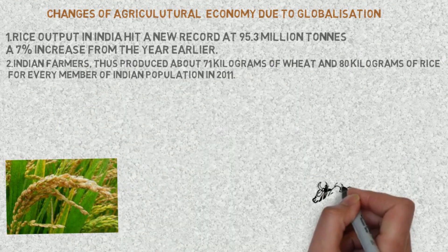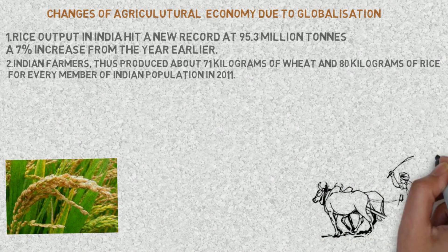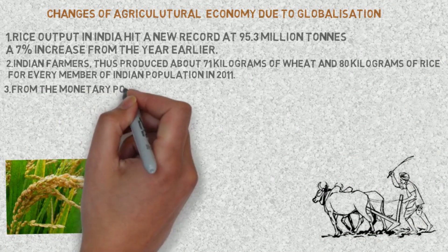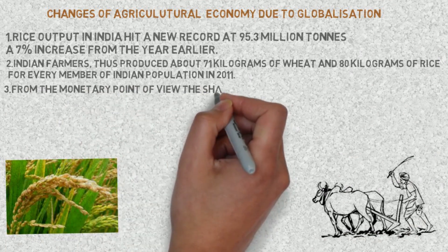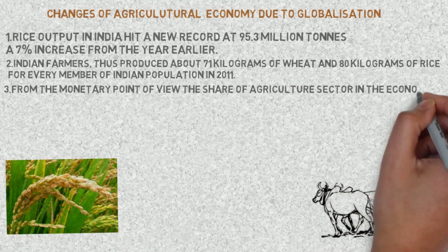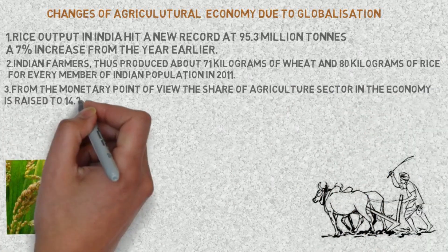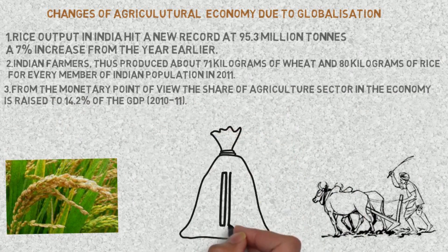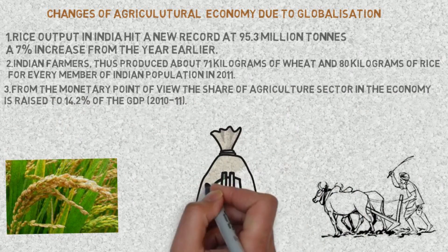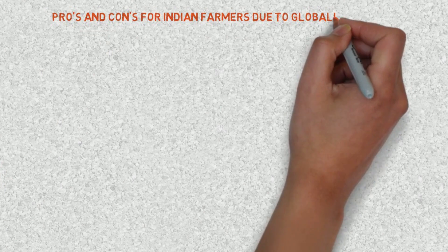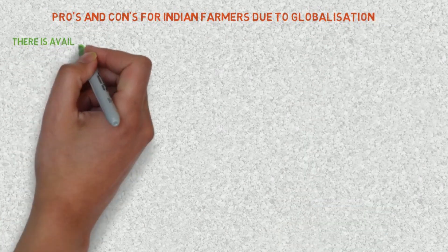In 2011, from the monetary point of view, the share of the agricultural sector in the economy rose to 14.2 percent of GDP in 2010-11. However, globalization was quite beneficial to many Indian farmers; on the other side, it affected them adversely too. Let's learn about the pros and cons for Indian farmers due to globalization.